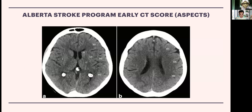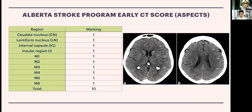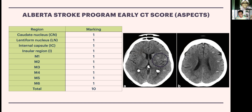To translate the ASPECTS diagram onto CT scan: you have the caudate nucleus, lentiform nucleus, insula, and internal capsule — a white matter structure — then M1 through M6. For each affected area subtract one mark. For example, if the lentiform nucleus, internal capsule, and M2 are involved, the ASPECTS score would be seven.